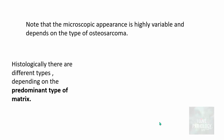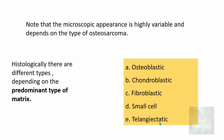Histologically, there are different types of osteosarcoma. Depending upon the predominant type of matrix, these can be classified as osteoblastic osteosarcoma, chondroblastic osteosarcoma, fibroblastic, small cell osteosarcoma, and telangiectatic osteosarcoma. These are the key variants an undergraduate student needs to know.